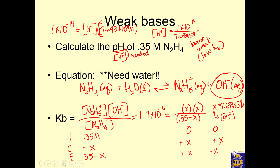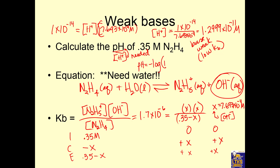The hydrogen ion concentration is 1.299 times 10 to the negative 11. Finally, pH equals negative log of 1.299 times 10 to the negative 11, and pH equals 10.89.